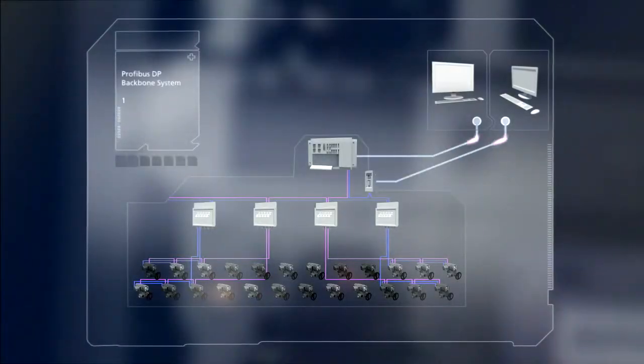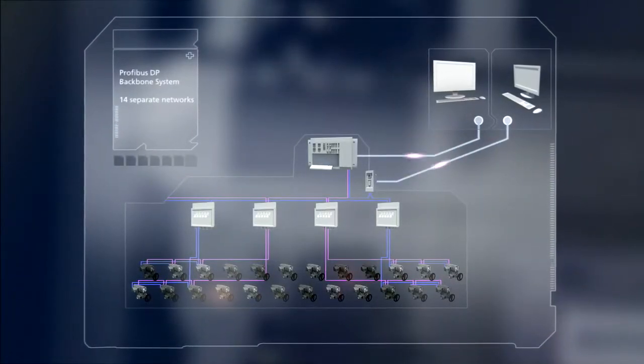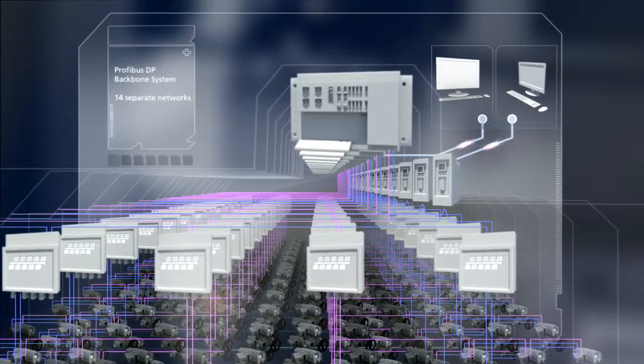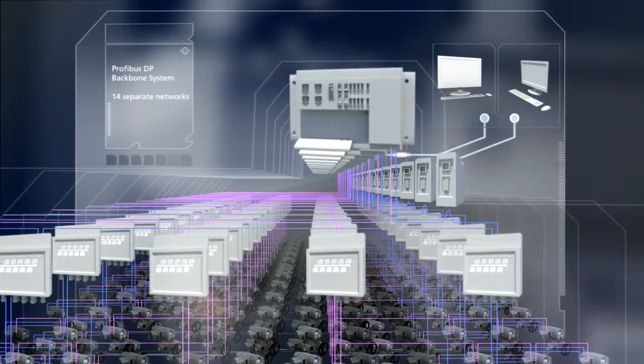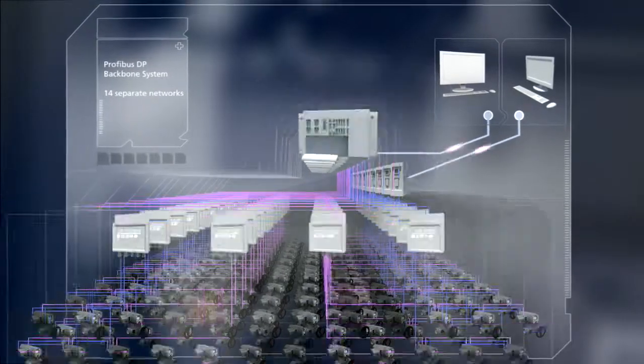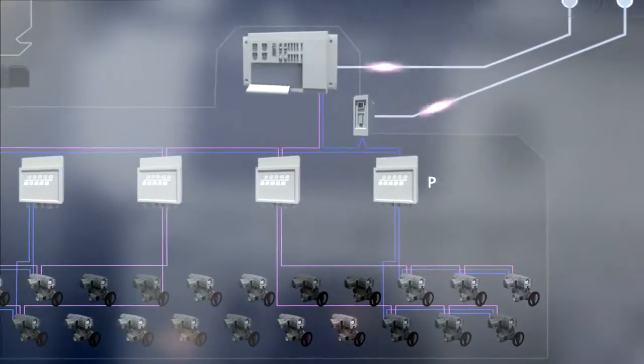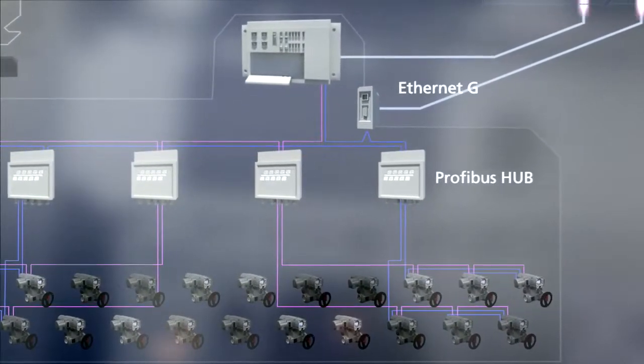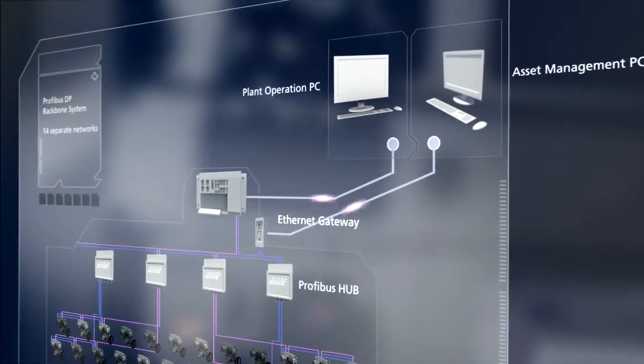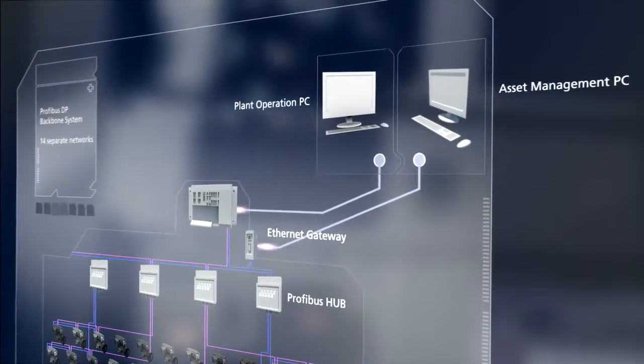The solution is based on a PROFIBUS DP backbone system and comprises 14 separate networks. Each network segment works autonomously and is protected against any impact occurring at other locations. Actuator information is converted via PROFIBUS hubs and Ethernet gateways and is connected to the PC for asset management by means of standard network cables.